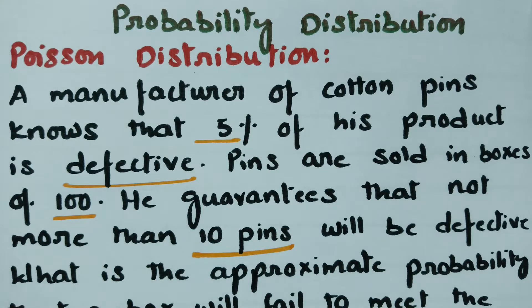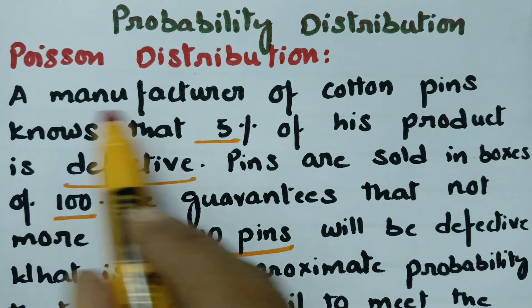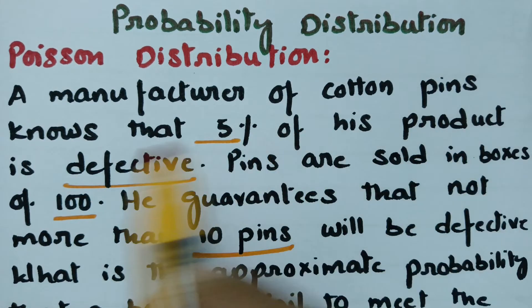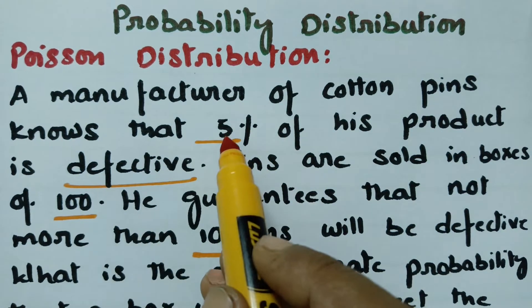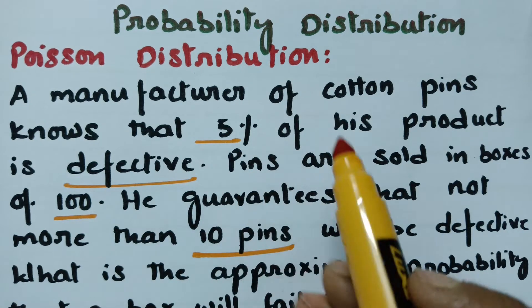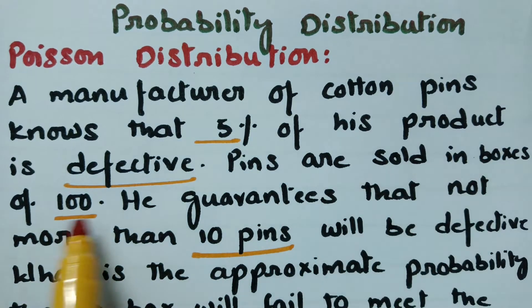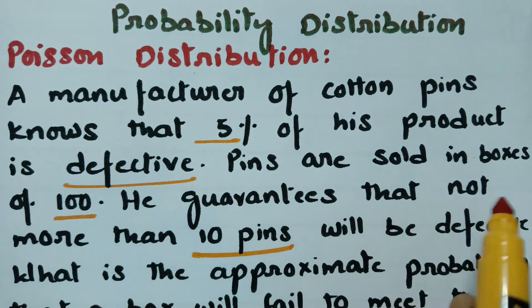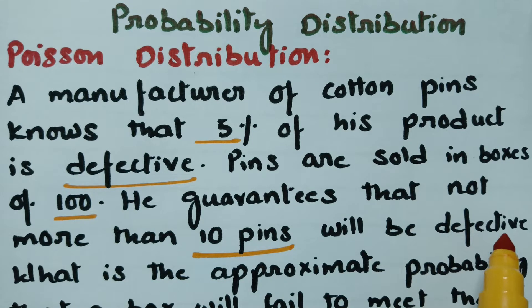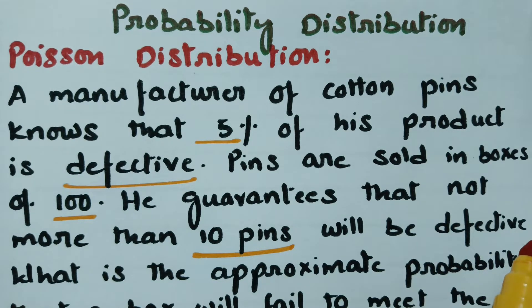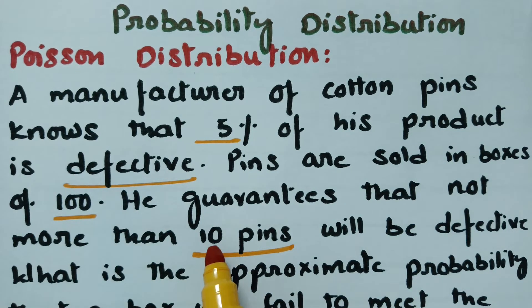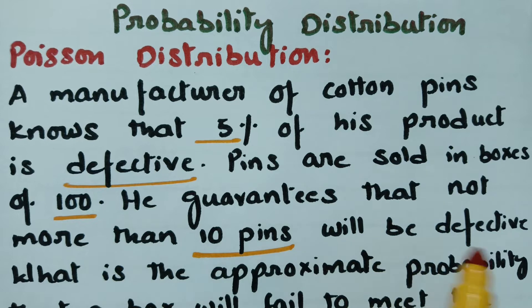This video is on Poisson distribution. The problem is: a manufacturer of cotton pins knows that 5% of his product is defective. So P is given as 5%. Pins are sold in boxes of 100, so N is equal to 100. He guarantees that not more than 10 pins will be defective — so out of 100, not more than 10 pins will be defective.